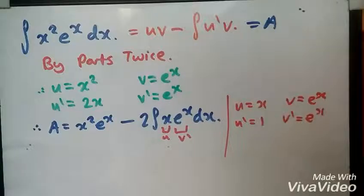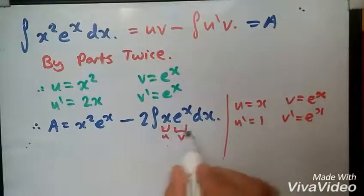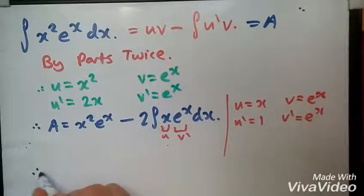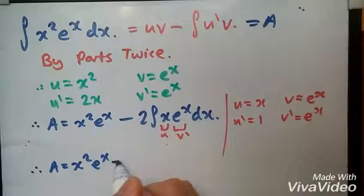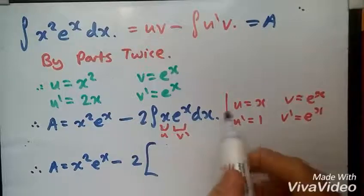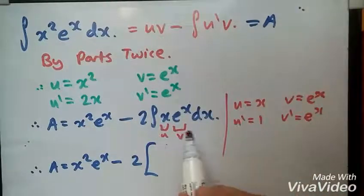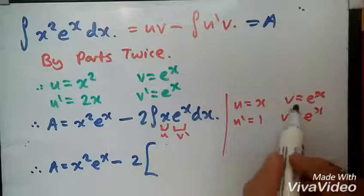Now solving this part, you have to be very careful how you solve this. Therefore A equals x squared e^x minus 2, now using the usual formula, u times v will be x times e^x.